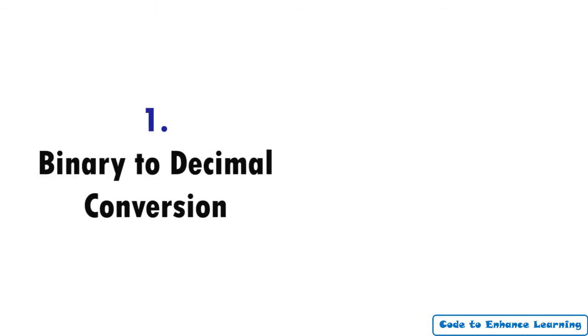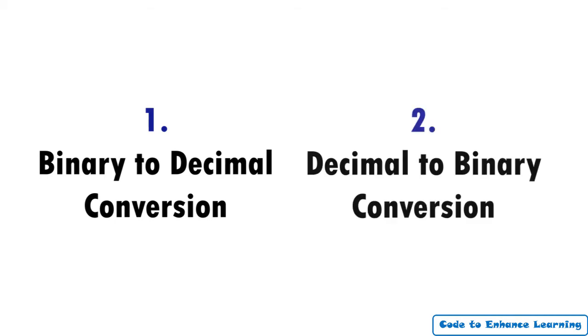There are two types of conversions possible. Binary number system into decimal number system, which we will learn today. And decimal number system into binary number system, which you can learn more about on your own. Let's understand how this conversion takes place.